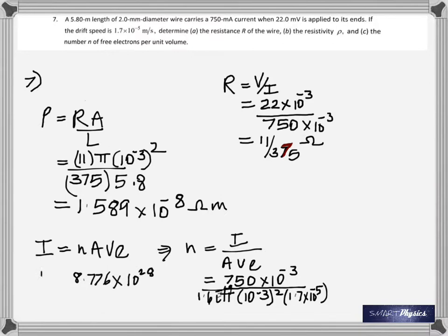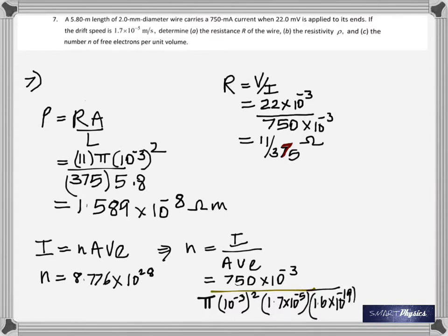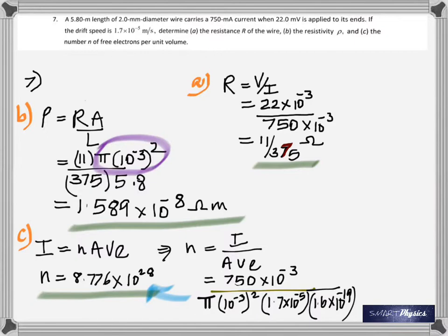Now that's not clear, I'm going to write that again. Okay, let me write this again, so that is pi times radius squared times the drift speed times the charge of the electron. And you get 8.776 times 10 to the 28 electrons in one meter cube.